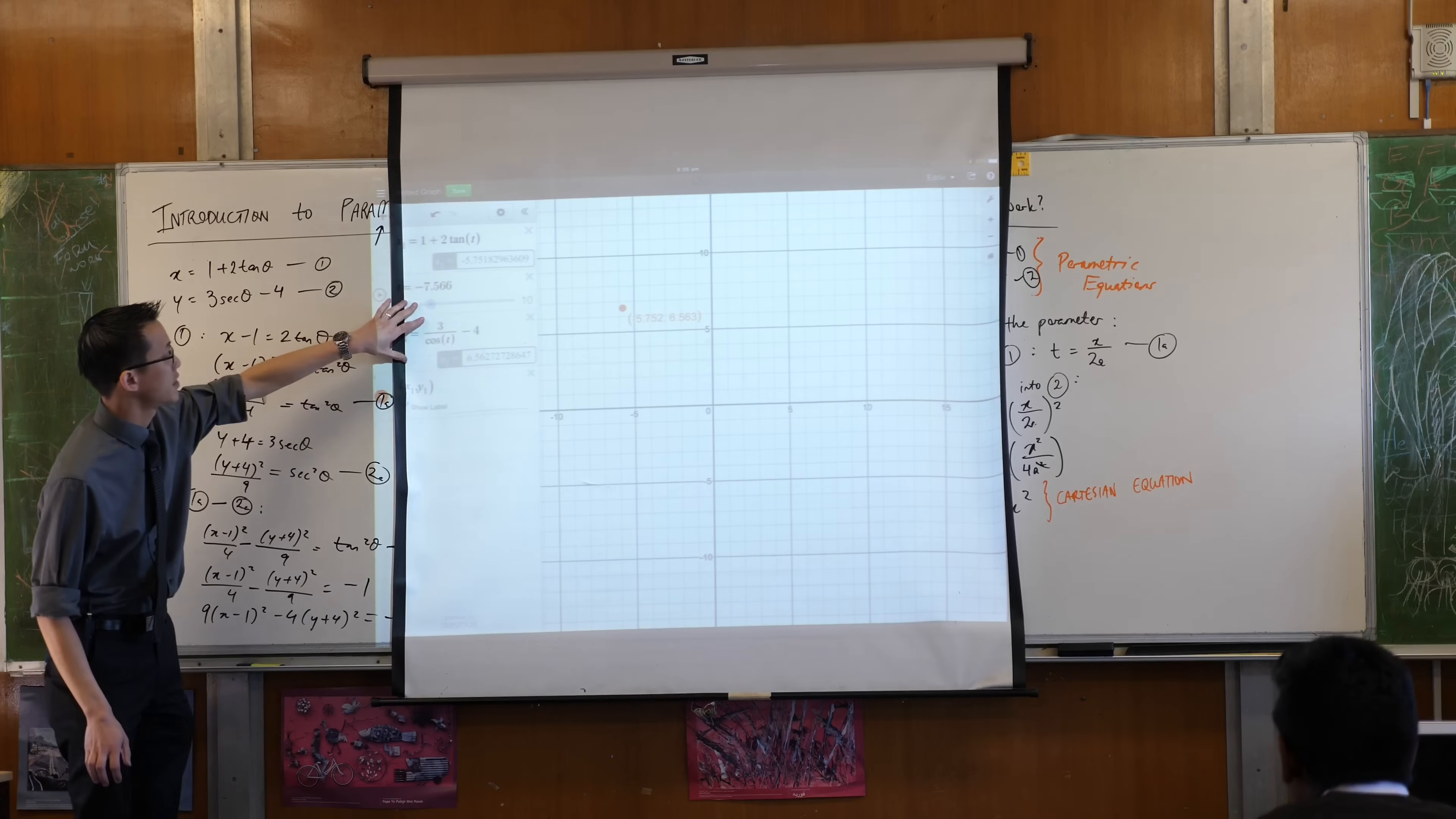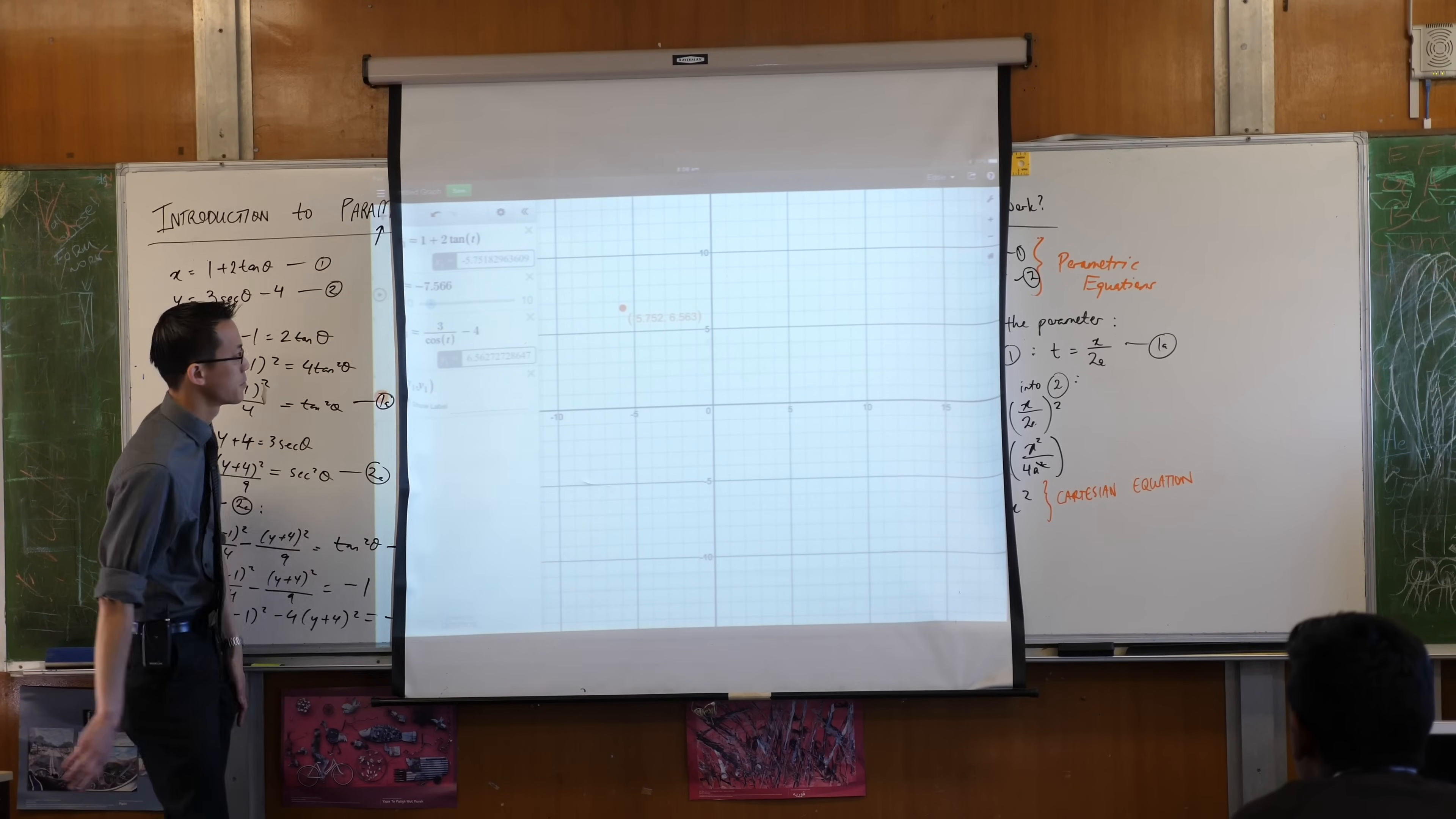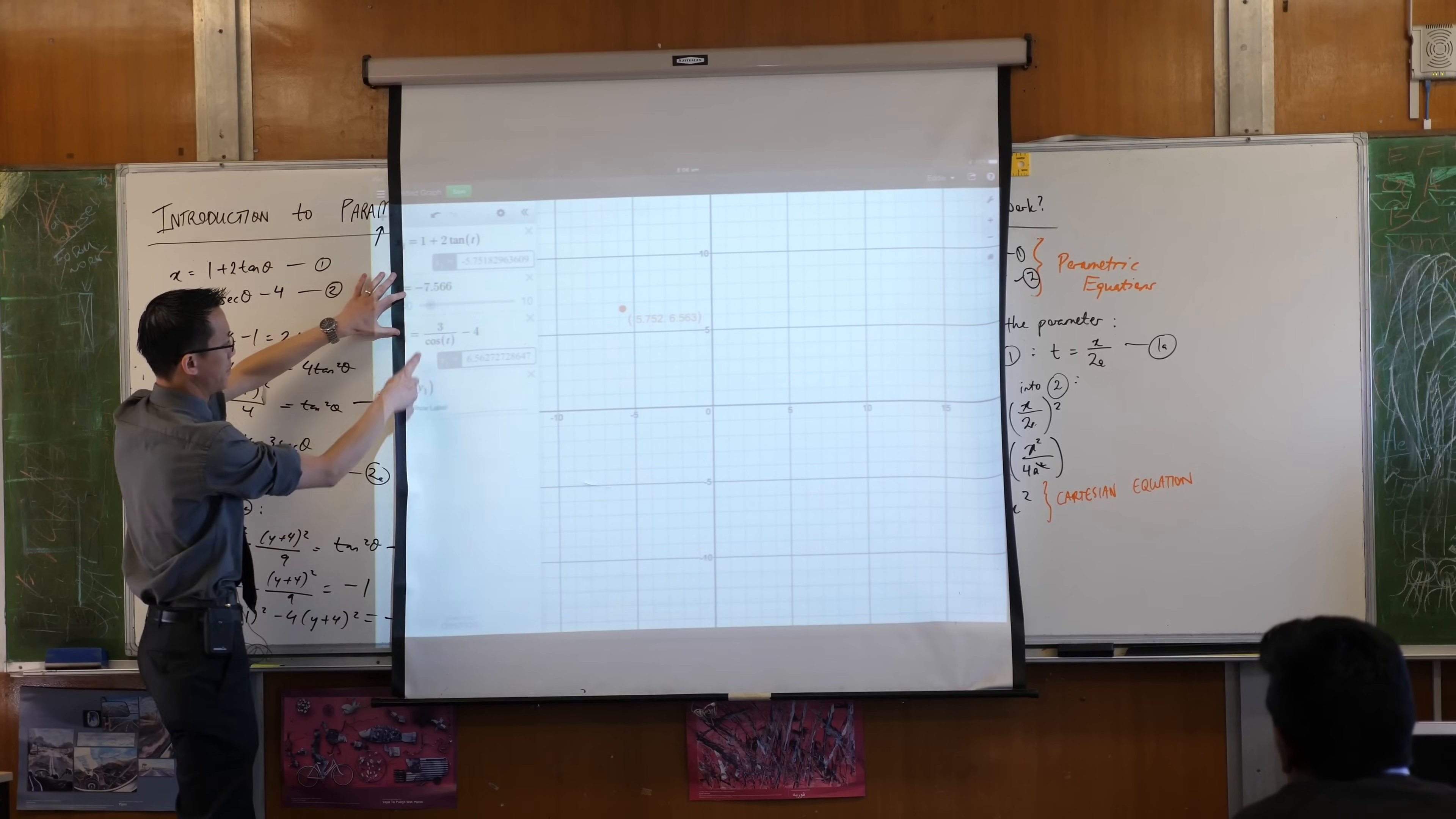Well, sorry you can't quite see. Here's my 1 plus 2 tan theta, I've just used t instead of theta because it's easier to write on this, and here's my 3 sec minus 4. Is that okay? So here's my x coordinate, it's just underneath this black bit,